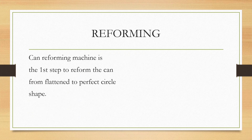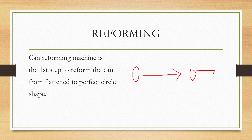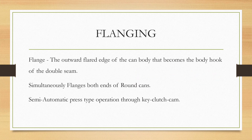Reforming is very simple. The can starts as a flattened surface. When you subject such a flattened surface to a reforming machine, the can turns into a perfect circle. So the can reforming machine is the first step, where a flattened can is turned into a perfect circle shape.